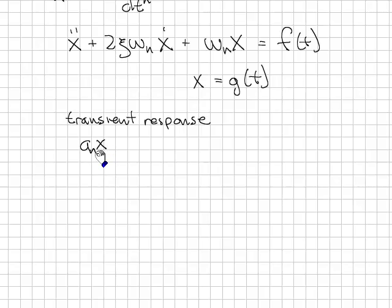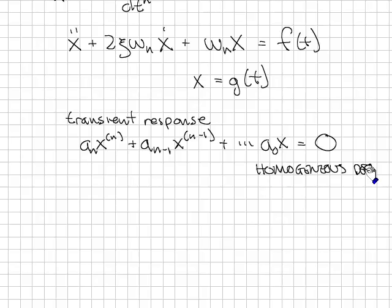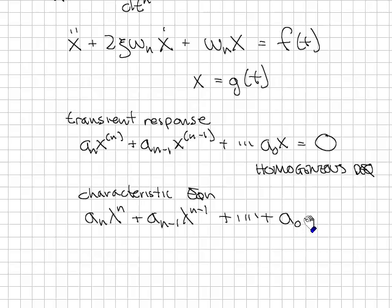That is, solving for this. This is the homogeneous differential equation. The solution to the homogeneous differential equation can be found by looking at the characteristic equation. The characteristic equation is found by replacing the derivatives of x with powers of lambda. So the characteristic equation in this case is a_n lambda^n plus a_(n-1) lambda^(n-1) plus all the way down to a_0.